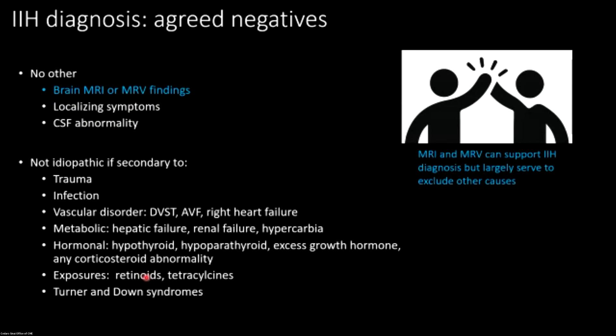We also want to see no localizing symptoms outside of the sixth nerve palsy, and normal CSF labs. The things that cause this that aren't truly idiopathic include prior trauma, prior CNS infection, anything that raises venous pressure — so thrombosed dural venous sinuses, any kind of fistula in the neuraxis, heart failure, metabolic causes like renal failure, liver failure, hypercarbia, and hormonal disruptions.